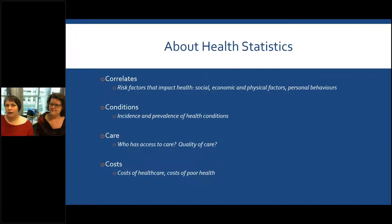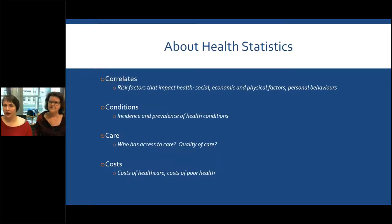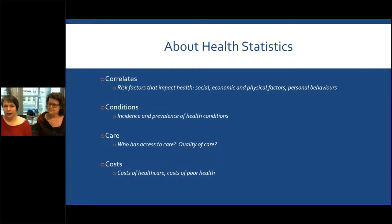There are four typical things that are measured. There are correlates — risk factors that impact health — social, economic and physical factors or personal behaviors, so things like smoking, air pollution, income, or education and how those affect health. It monitors conditions: the incidence, the number of new cases of a disease, or the prevalence of a condition in a population. It also looks at care — who has access to care, what's the quality of care — which can be used to spot inequities according to geographic location or racial makeup. Or it can also look at costs: the cost of health care and the cost of having poor health.